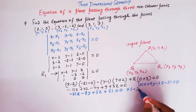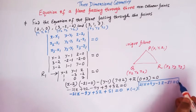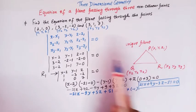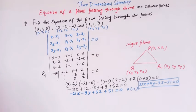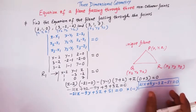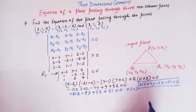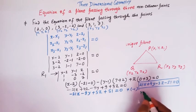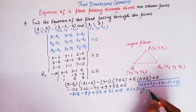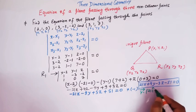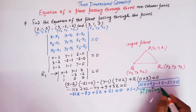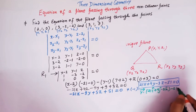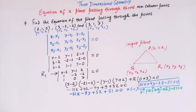So the Cartesian equation of the plane passing through these three non-collinear points is 21x + 9y − 3z − 51 = 0. We can also write the vector form of this equation as vector r dot (21î + 9ĵ − 3k̂) − 51 = 0.